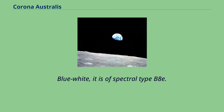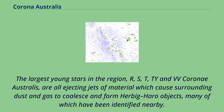The largest young stars in the region — R, S, T, T, and VV Corona Australis — are all ejecting jets of material which cause surrounding dust and gas to coalesce and form Herbig-Haro objects, many of which have been identified nearby.